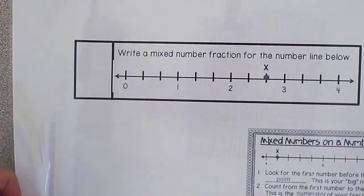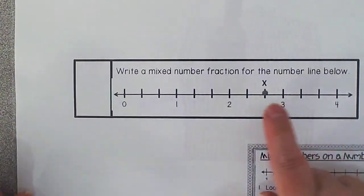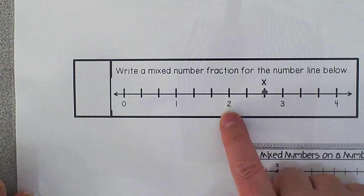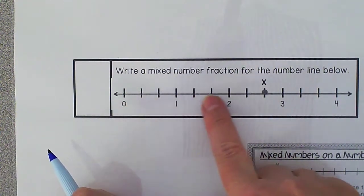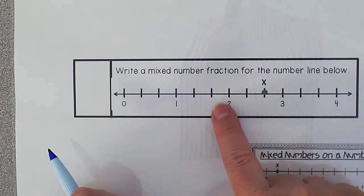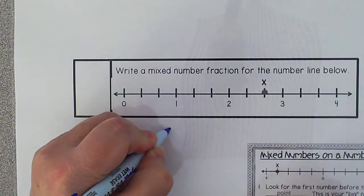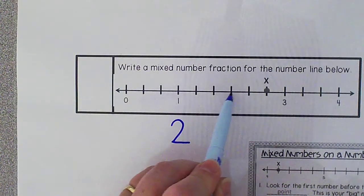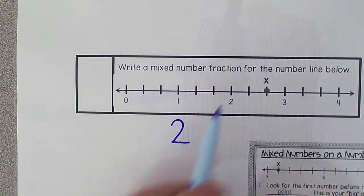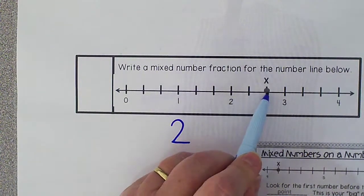Let's try another mixed number number line. Notice point X is located in between my 2 and my 3. When I'm looking at my number line, I see the last number before my X is a 2. So my whole number is going to be a 2. Next, I'm going to count how many lines past the 2. 1, 2.